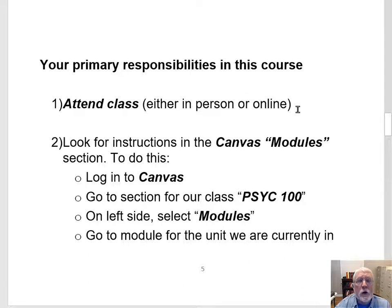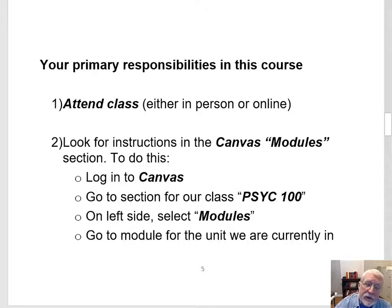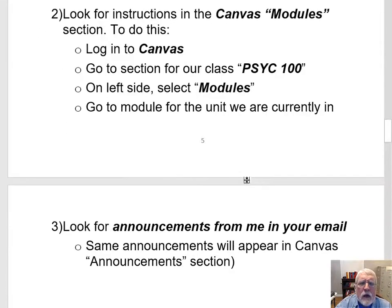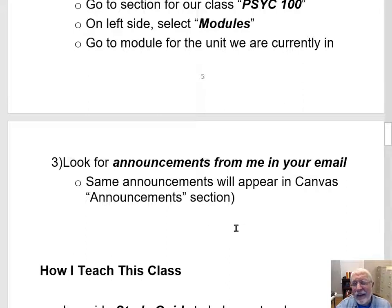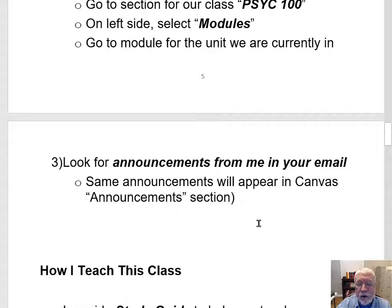Going back to today's overview: on a given day, the first things you'll want to do is go to Canvas, go to the Modules, find the module for the current week or day, and see what tasks, activities, and downloads I have for you there. From time to time, check your email and look for announcements from me. If something important is coming up or something has changed, I'll send you an email. If you miss an email, you can always log into Canvas and go to the Canvas Announcements section to see the same messages. We're about 13 minutes into this video — the next topic will be how I teach this class, which we'll pick up in the next part of this video series.